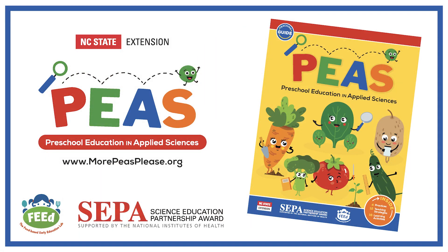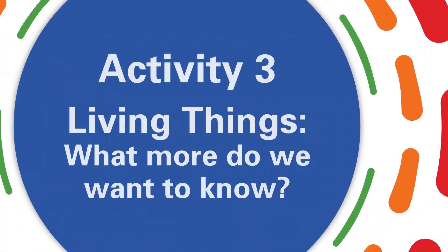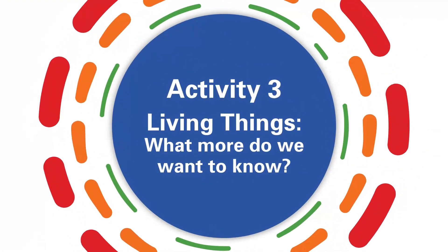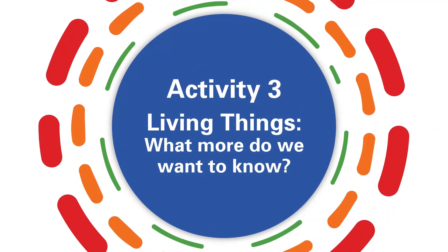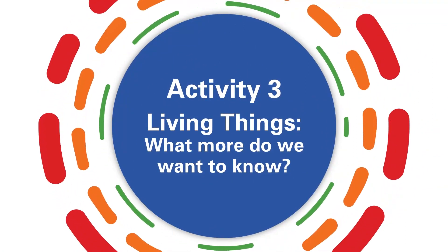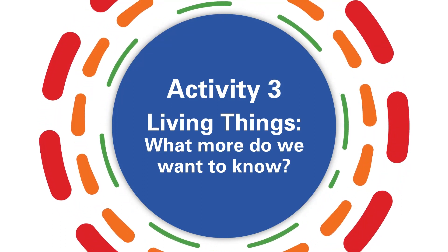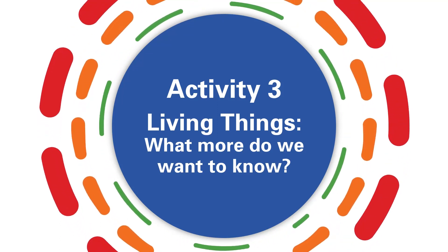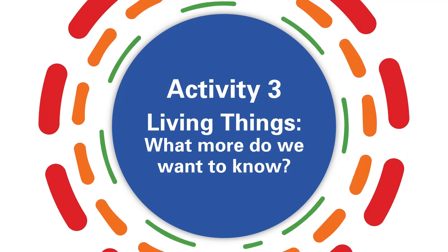When teaching the living things unit in your classroom, you will want to follow along with the page-by-page script located in the PEAS teaching guide to see how the four activities should be performed. Activity 3 is all about figuring out what more children want to know about seeds. You will encourage children to ask more questions about seeds, read a book about how seeds move, and sort seeds children bring from home.